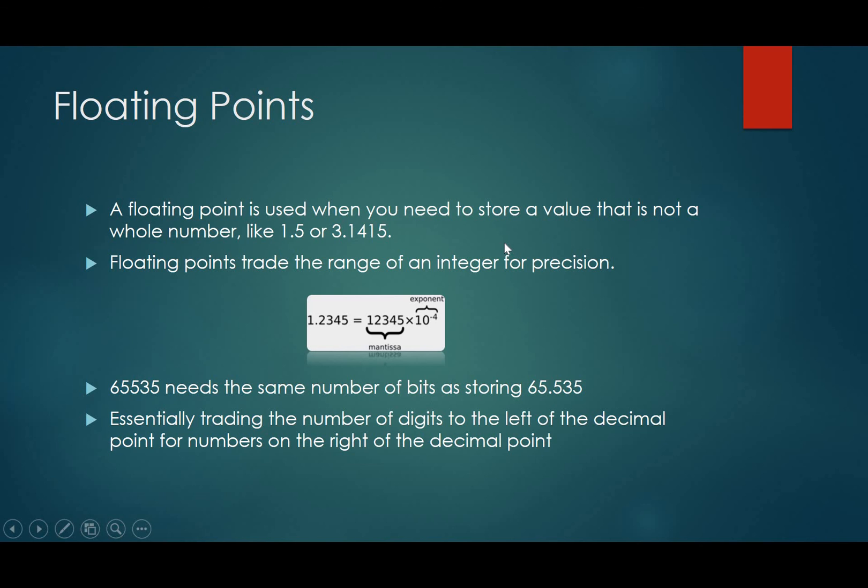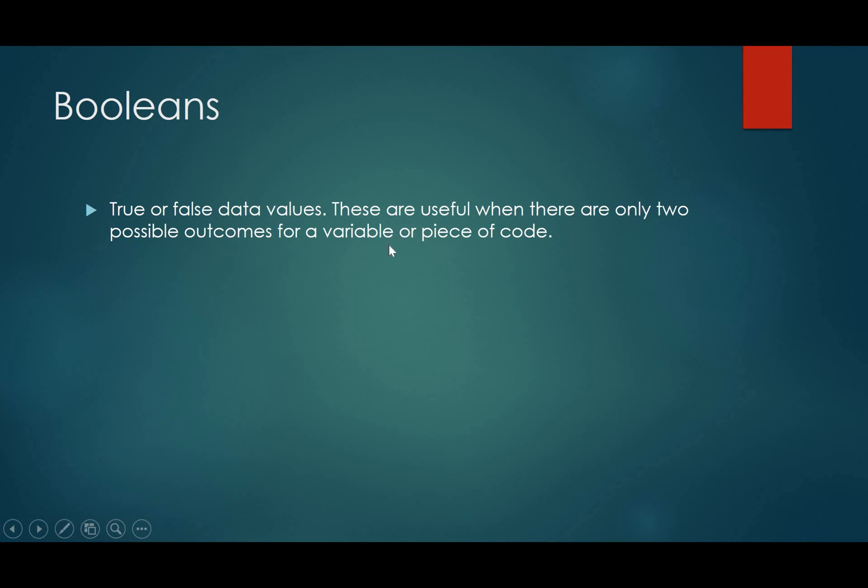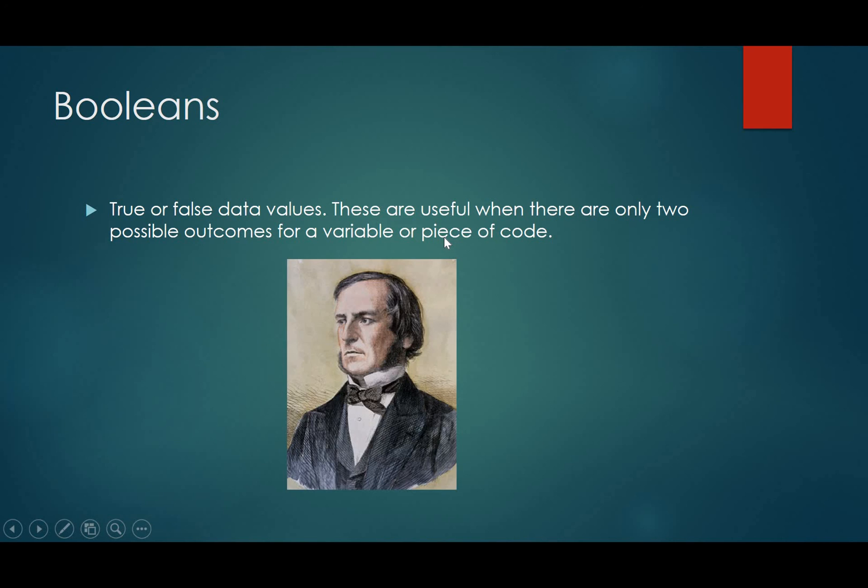Next up is a pretty useful one. It's a boolean, and those are just true or false data values, on-off, things like that. They're useful when you have only two outcomes. And they're named after this guy, George Boole, and he is a very fundamental piece of what made computers possible. He founded what's called Boolean algebra, which really governs the logic behind how computers work and how they process information. Boolean logic is the fundamental math behind computers.